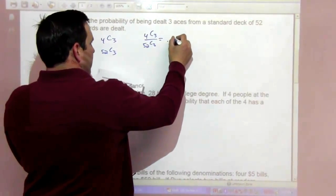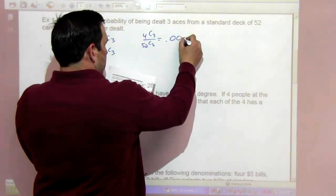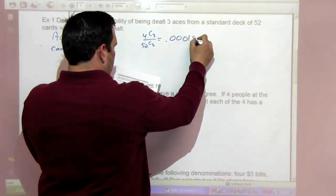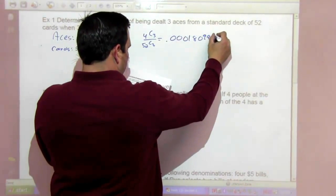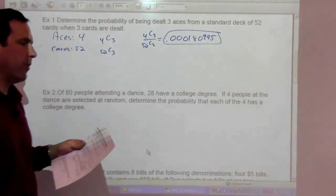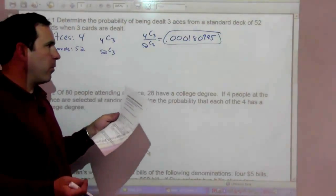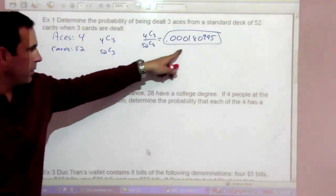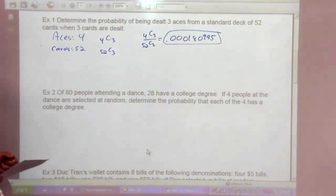That's going to be 0.000180995. The calculator may have given it to you in scientific notation with like e negative 4. That means times 10 to the negative 4, but there you are in decimal form, standard form.